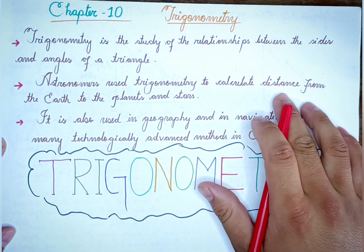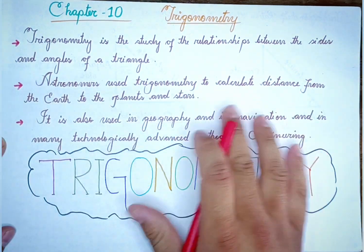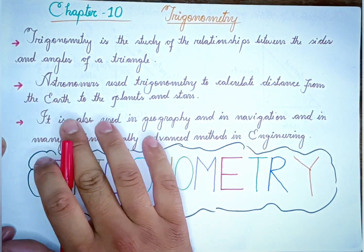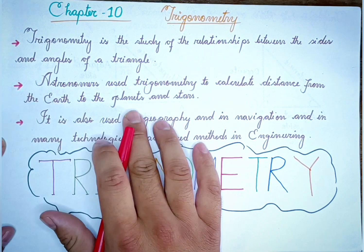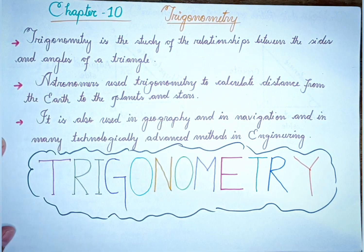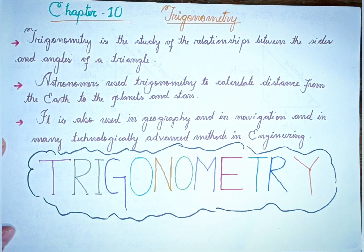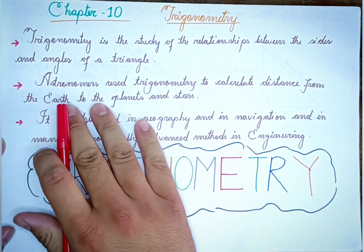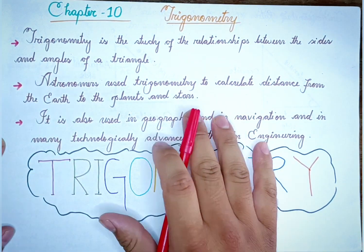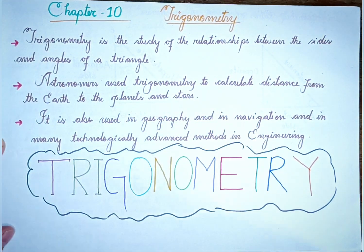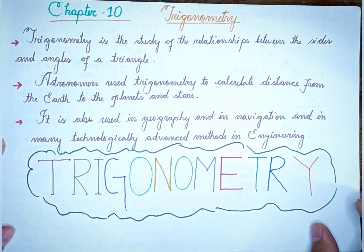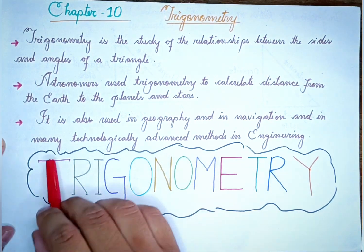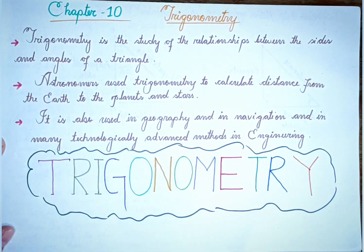The reason is to calculate the distance from the Earth to the planets and stars. Astronomers use trigonometry, and it is also used in Geography.